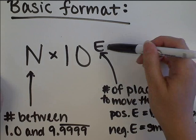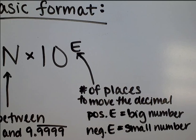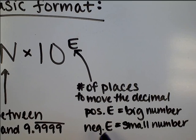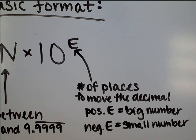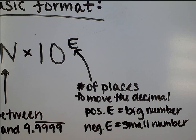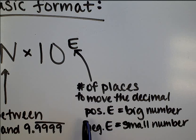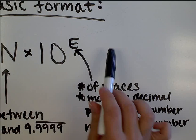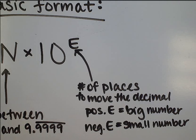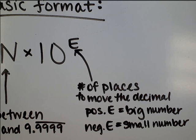What the exponent tells us is the number of places we would have to move the decimal in order to get our final number. Now if this E is a positive number, that means that this whole thing represents a big number, some number of hundreds, thousands, millions, billions, trillions, et cetera.